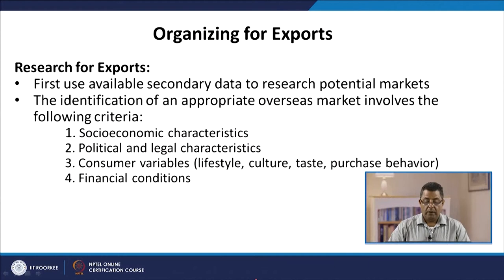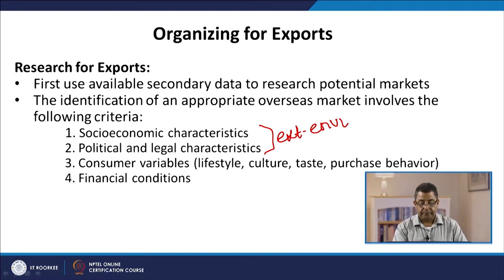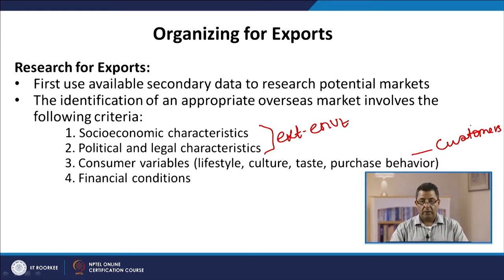How to go about organizing for exports? The first step is conducting research. Available secondary data should be used to research potential markets. The identification of an appropriate market involves the following criteria: socio-economic characteristics, political and legal characteristics, consumer variables such as lifestyle, culture, taste and purchasing behaviour, and financial conditions. We look at the broader external environment variables first, then move on to the narrower customer-related variables.